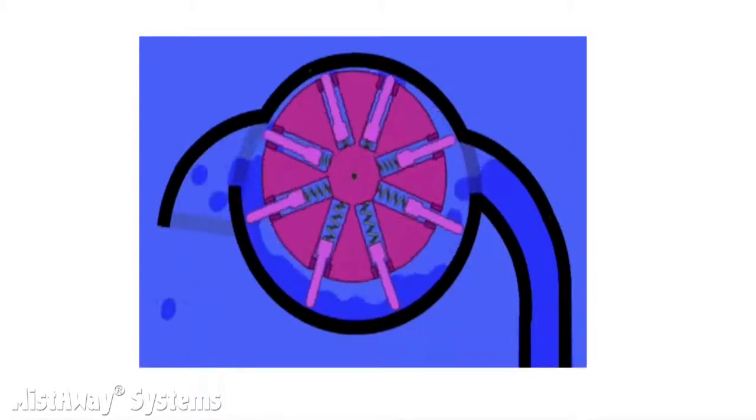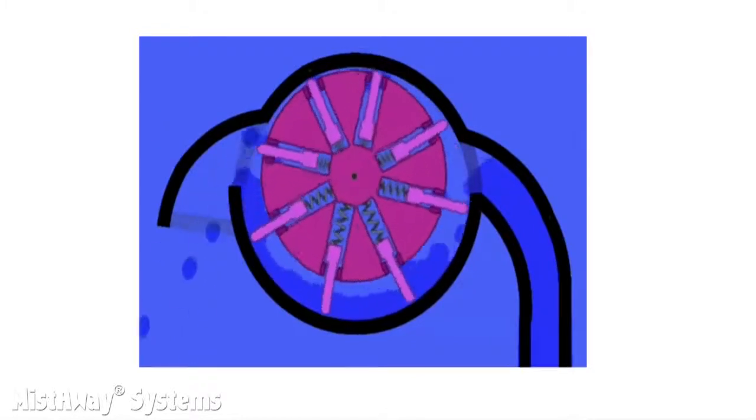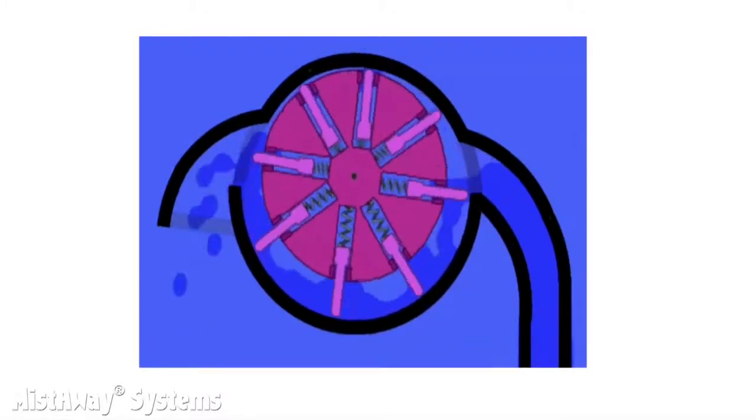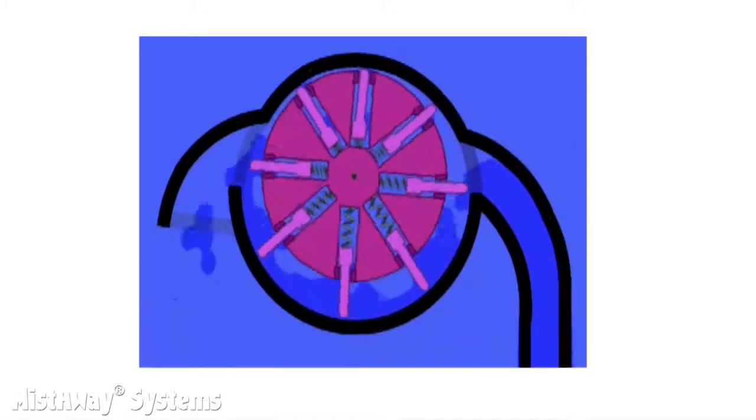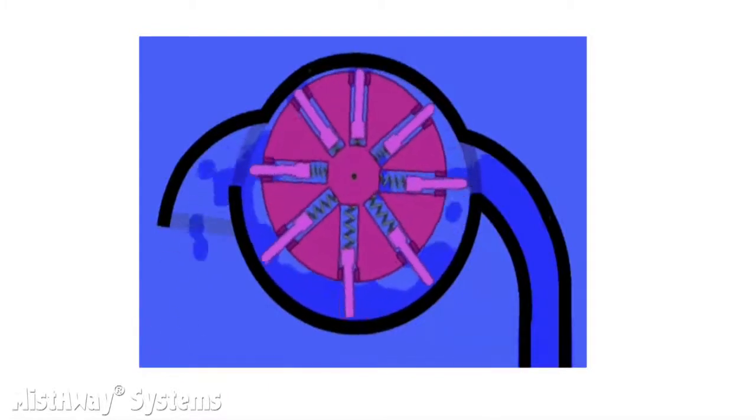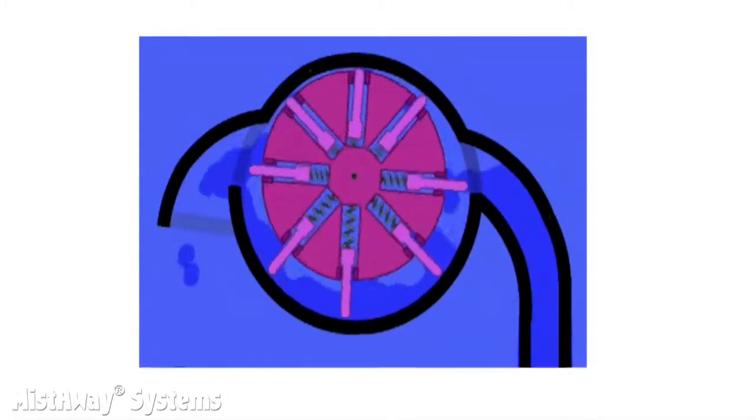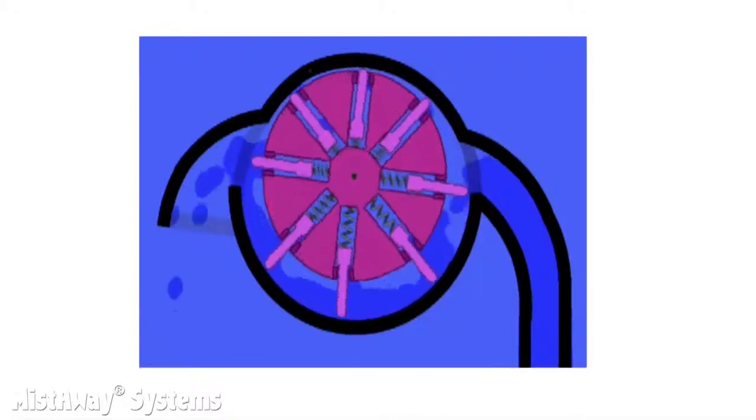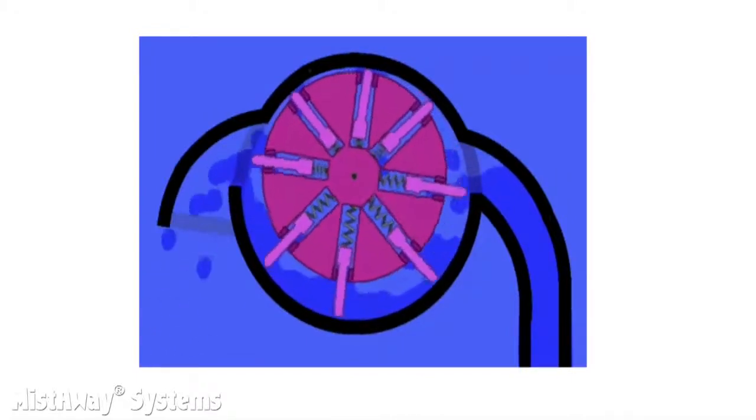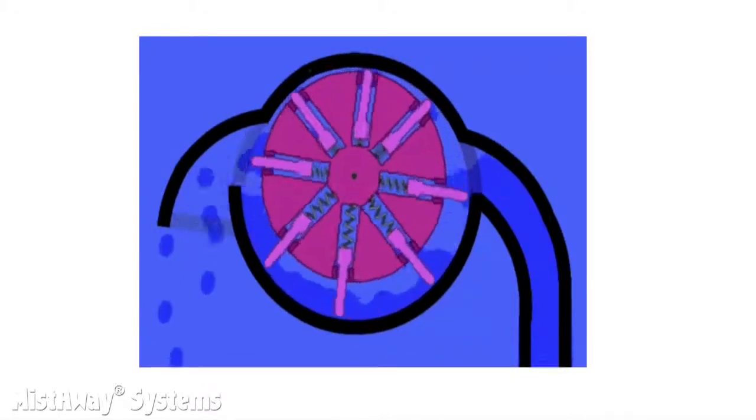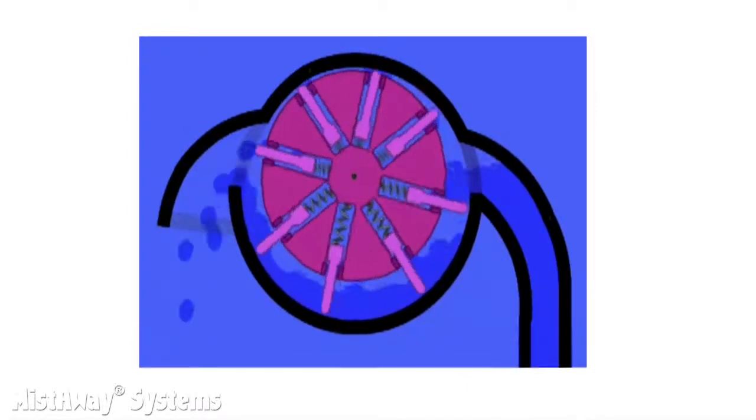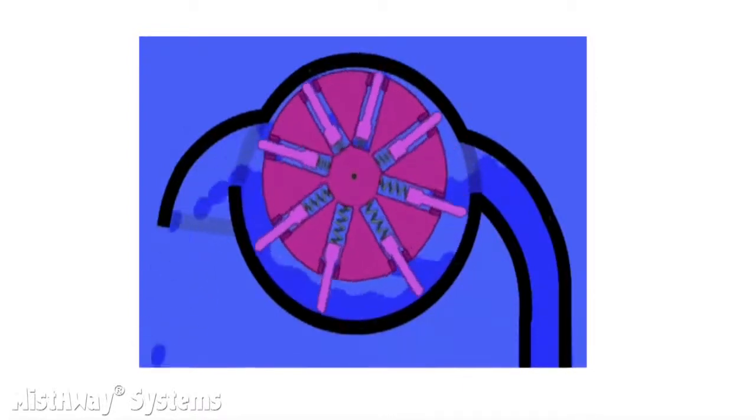Note that the size of the chambers change during the rotation. On the intake side, you'll see that the size of the chambers created by the vanes increases as the rotor moves clockwise past the inlet. This creates a suction that pulls fluid into the pump. As the vanes move toward the discharge side, the chamber decreases in size, adding pressure to the fluid as it exits the pump.